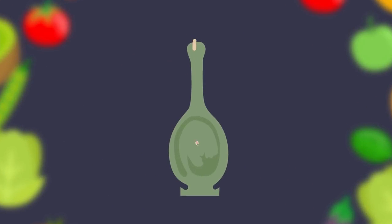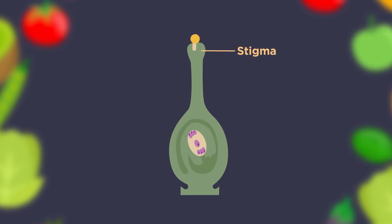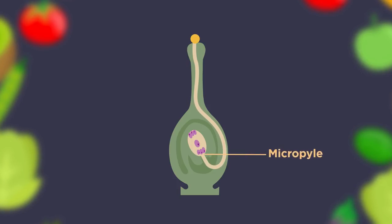Once a plant has been pollinated, fertilization can occur. Fertilization results in the production of seeds. A mature pollen grain containing two male sex cells has landed on the female stigma of the same species. The pollen grain grows a pollen tube that goes down the female style to the ovary, where it enters through an opening called the micropyle.